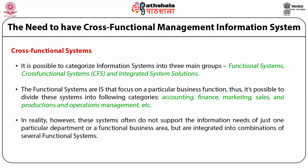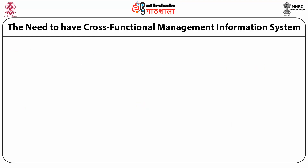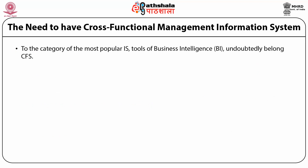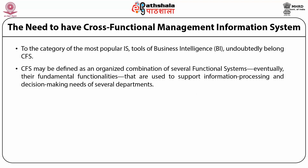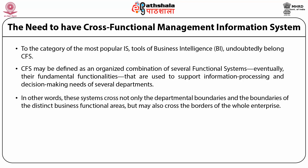In reality, however, these systems often do not support the information needs of just one particular department or a functional business area but are integrated into combinations of several functional systems. To the category of the most popular information system tools of business intelligence, that is BI, undoubtedly belong cross-functional systems, or CFS. These may be defined as an organized combination of several functional systems, whose fundamental functionalities are used to support information processing and decision-making needs of several departments. In other words, these systems cross not only the departmental boundaries and the boundaries of distinct business functional areas but may also cross the borders of the whole enterprise.